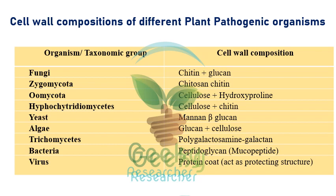Now we look at cell wall compositions of different plant pathogenic organisms. This is commonly asked in NET question papers. In the 2021 NET paper, a question asked: 'Oomycota cell wall is composed of cellulose and a little amount of hydroxy proline.' Fungal cell wall is made up of chitin and glucan. Zygomycota cell wall is made up of chitosan and chitin.